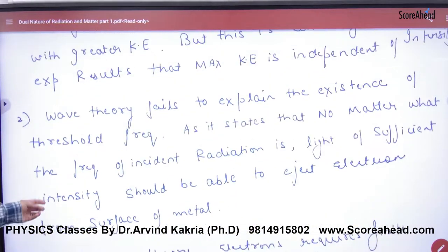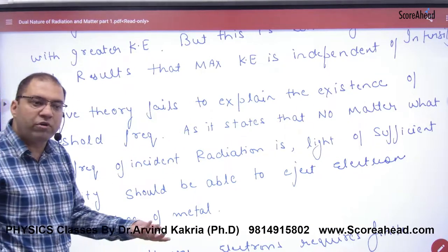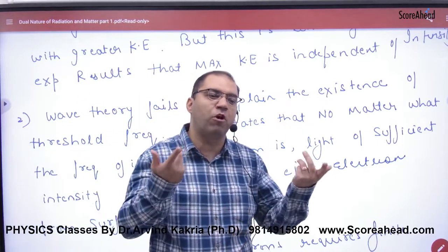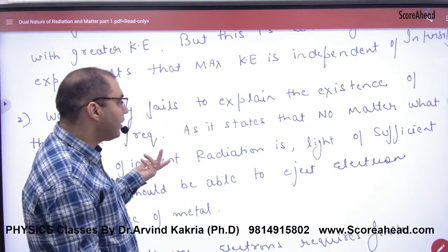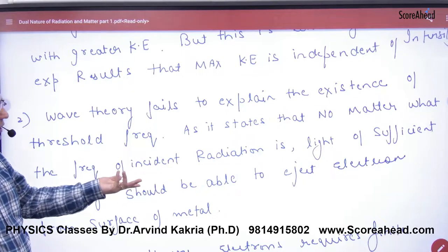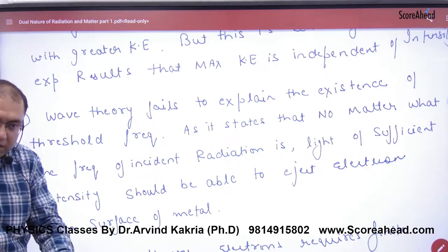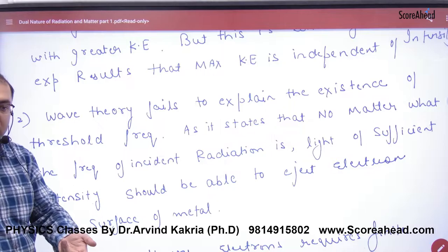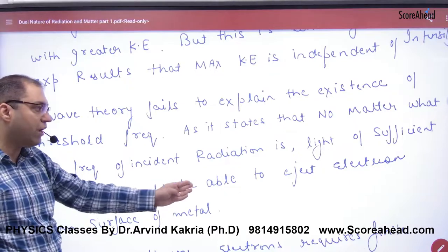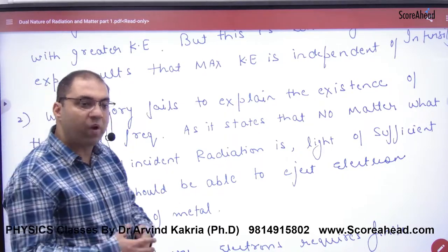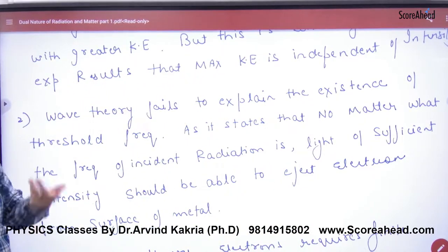Next, wave theory fails to explain the existence of threshold frequency. Wave theory says: keep giving energy, the electron will keep absorbing it and eventually run away. But the threshold concept says otherwise. Wave theory states that no matter what the frequency of incident radiation, when you increase intensity you increase energy, and the electron should escape. So light of sufficient intensity should be able to eject electrons from the surface of the metal regardless of frequency — but in reality there is a contradiction with the photoelectric law.